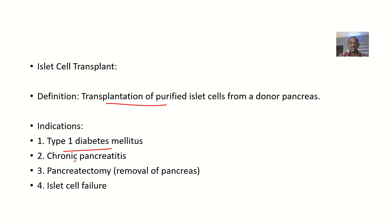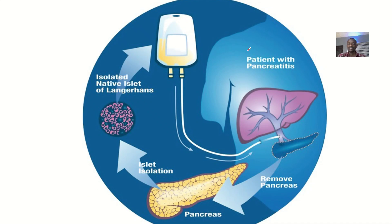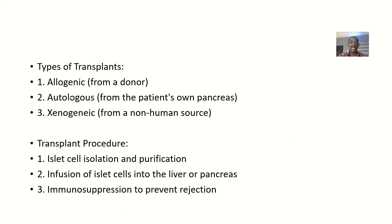If somebody has chronic pancreatitis, you might want to cut out some cells and replace with good ones. If there's total pancreatectomy, this is a way of trying to balance things up. And if there's islet cell failure — patients with pancreatitis whose native islet of Langerhans cells failed can have new cells transplanted.